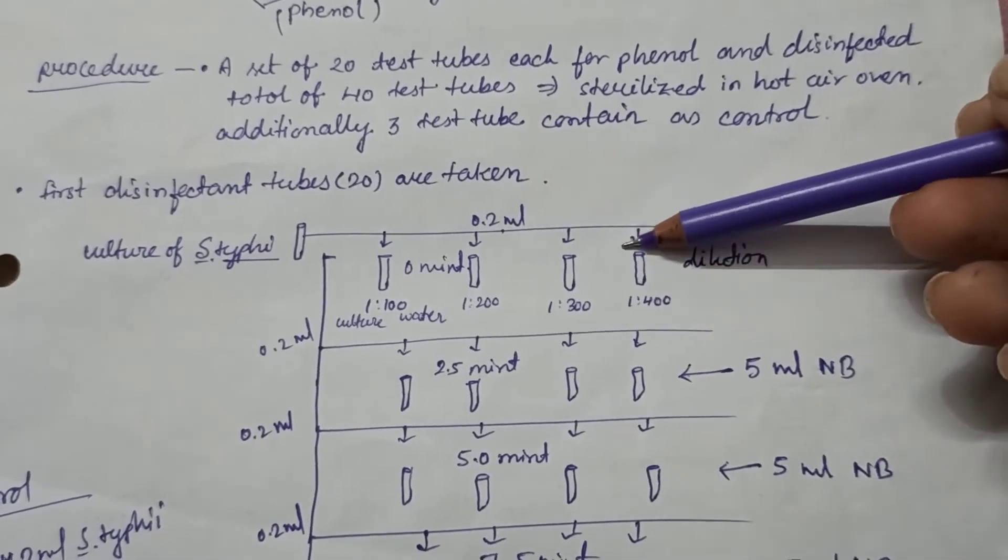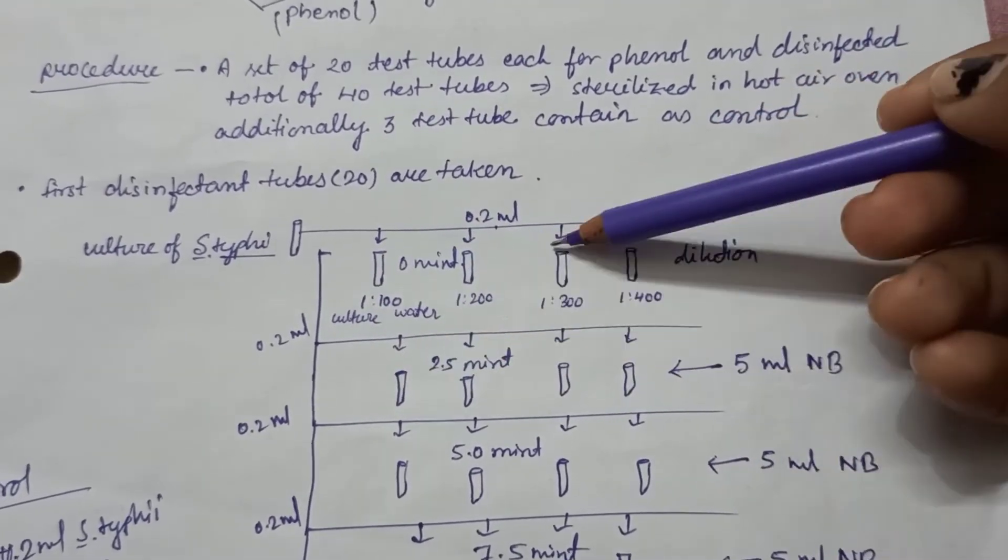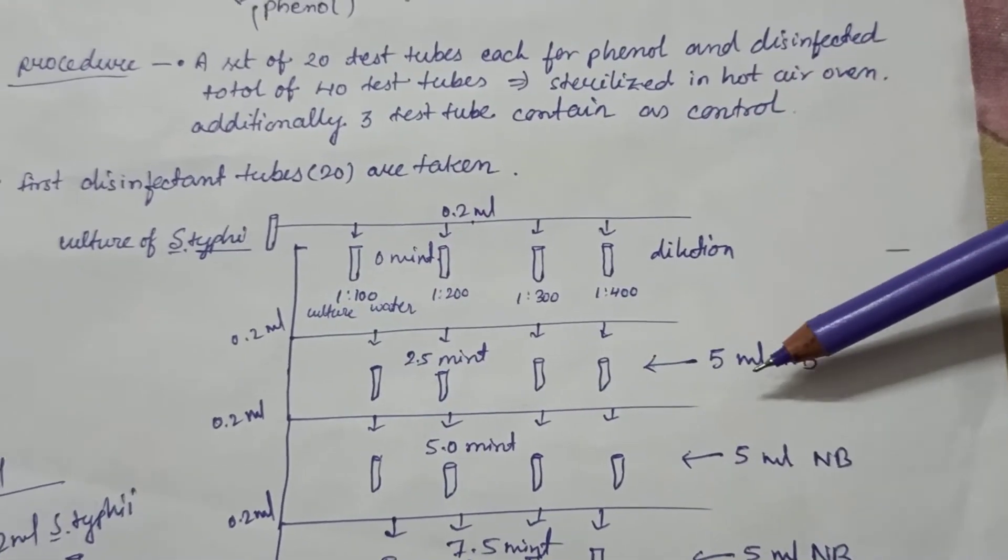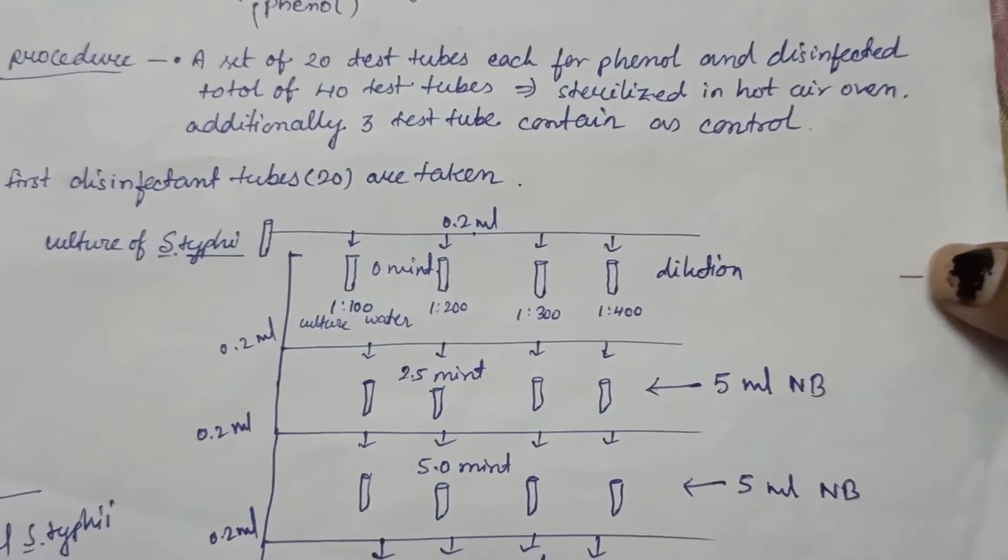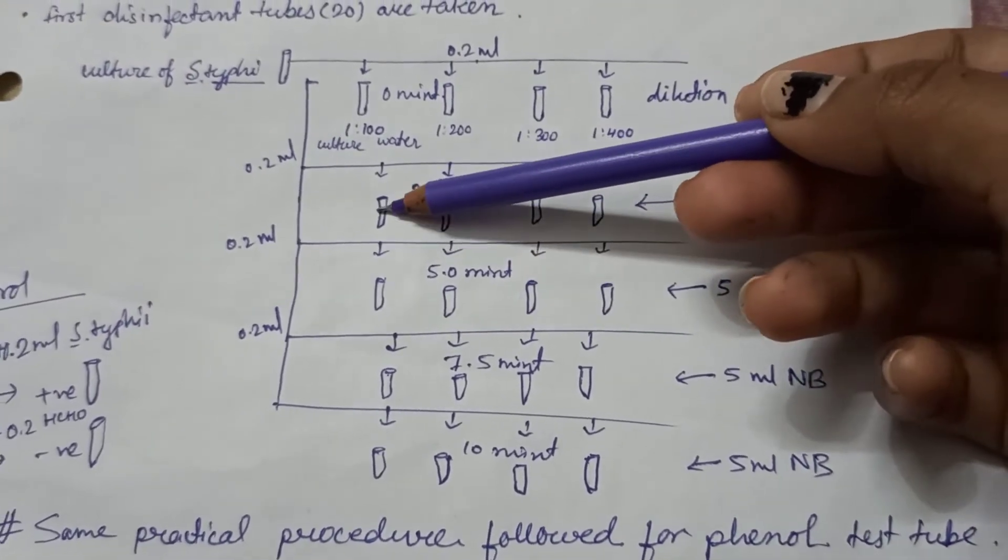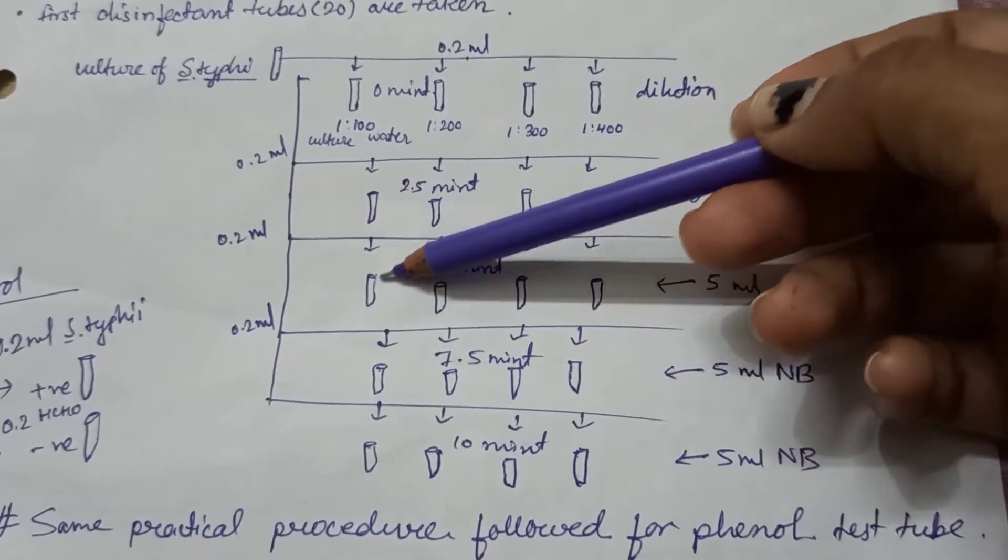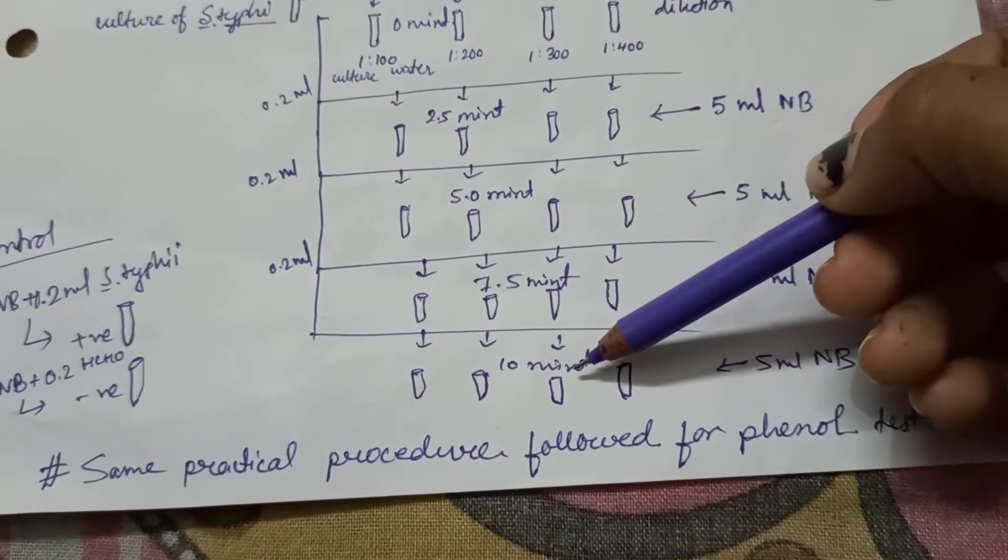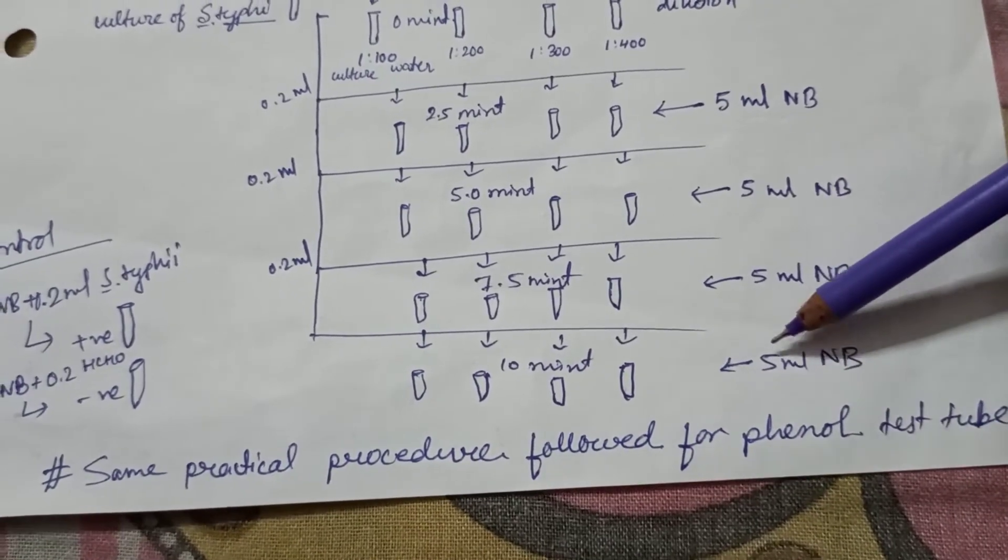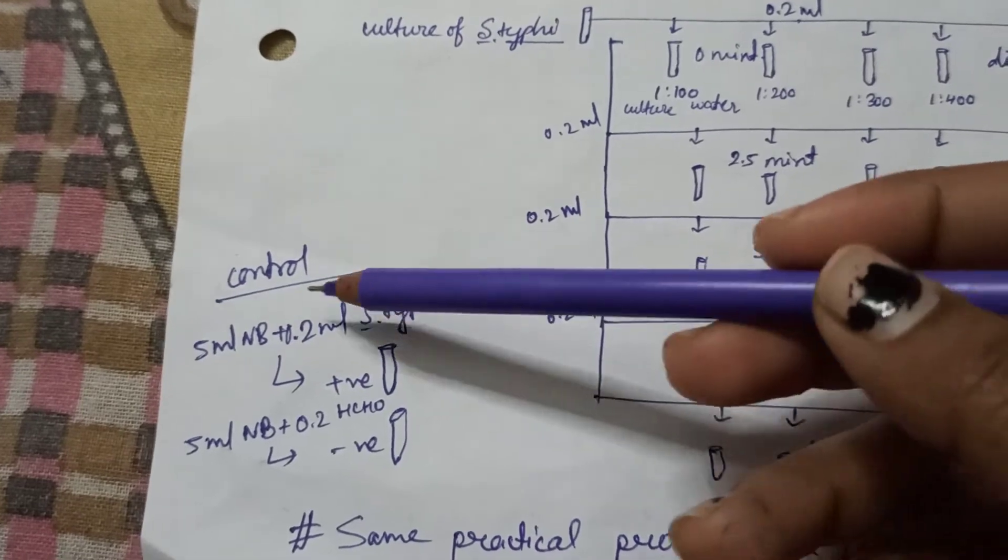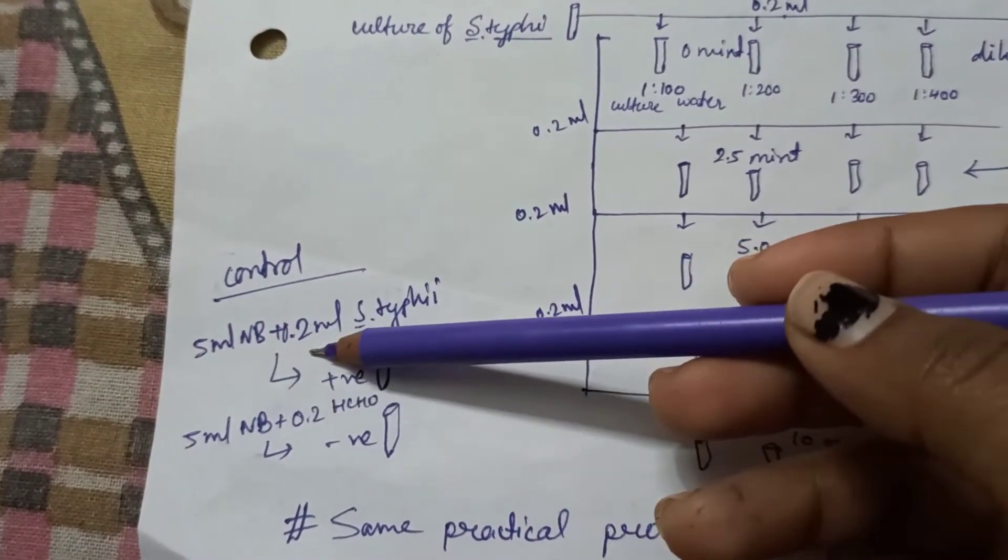After 2.5 minute intervals, we will take from this tube to this tube, which contains 5 ml of nutrient broth. After five minute intervals, we will transfer this sample to the test tubes. We will perform up to 7.5 minutes with 5 ml nutrient broth.